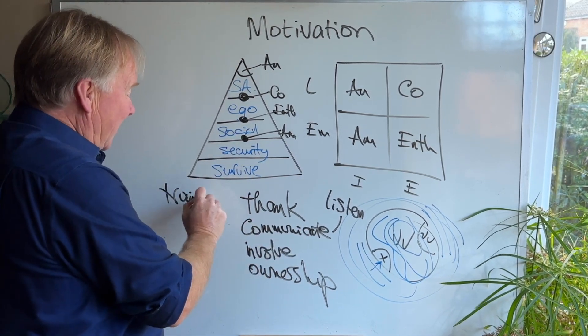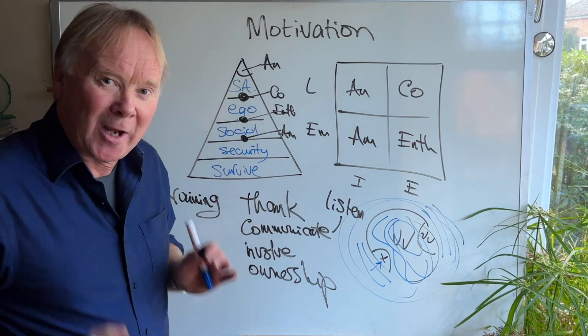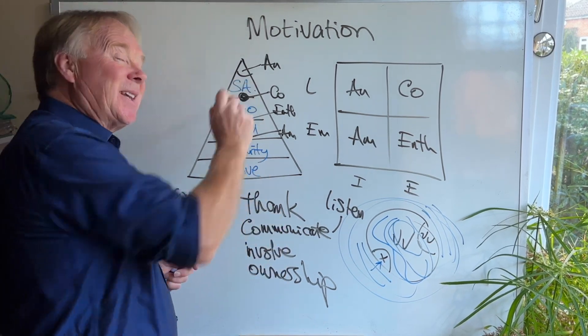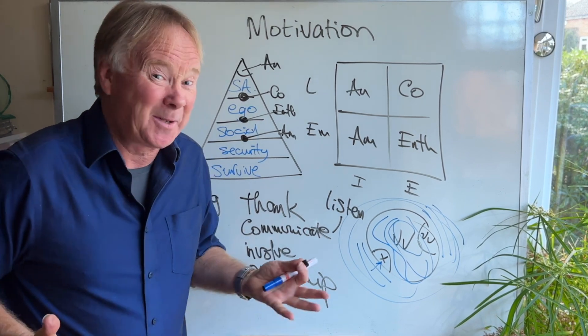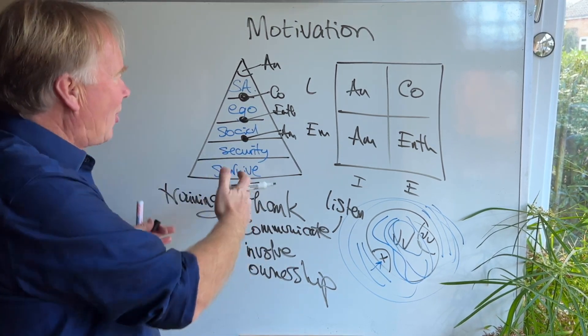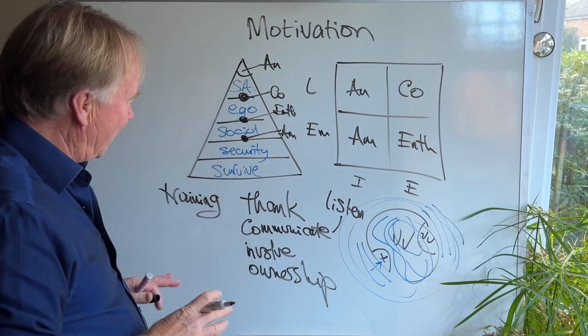Then the next thing you can do that's guaranteed to motivate people is training. I would say this. I'm a bit biased. But if you train people, it gives them the skills to get self-actualization and they feel more secure because you're not going to waste money on someone you're going to get rid of next week. So training is absolutely great for all the different levels of Maslow.